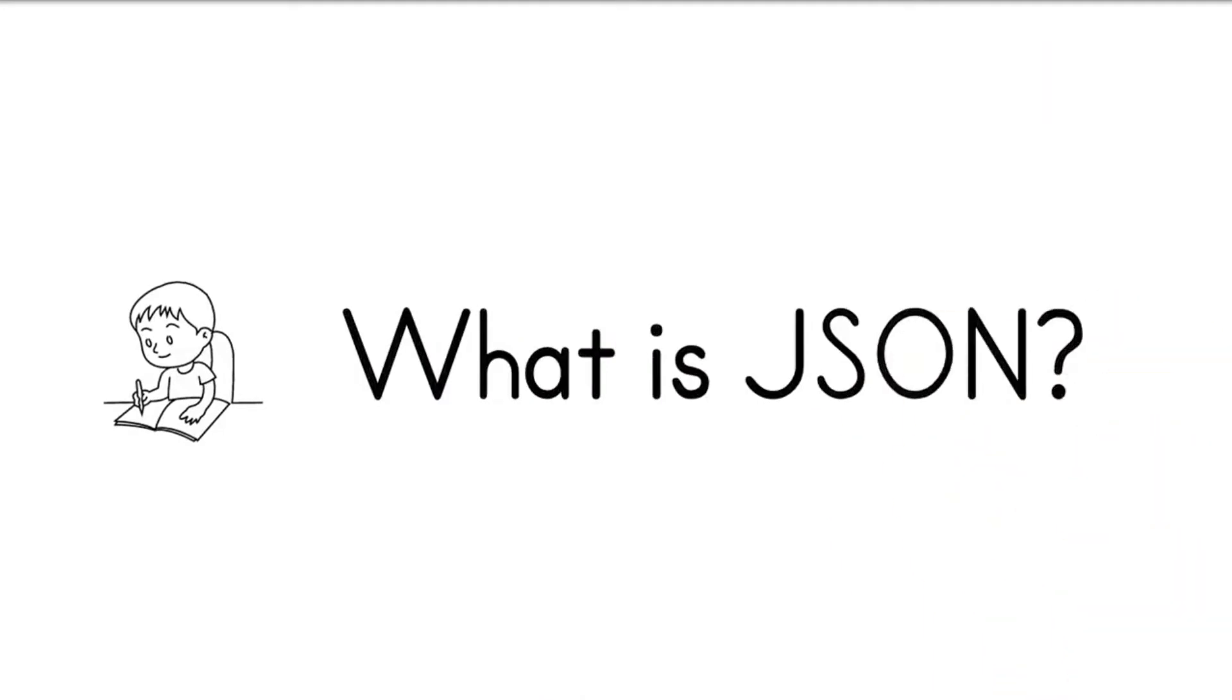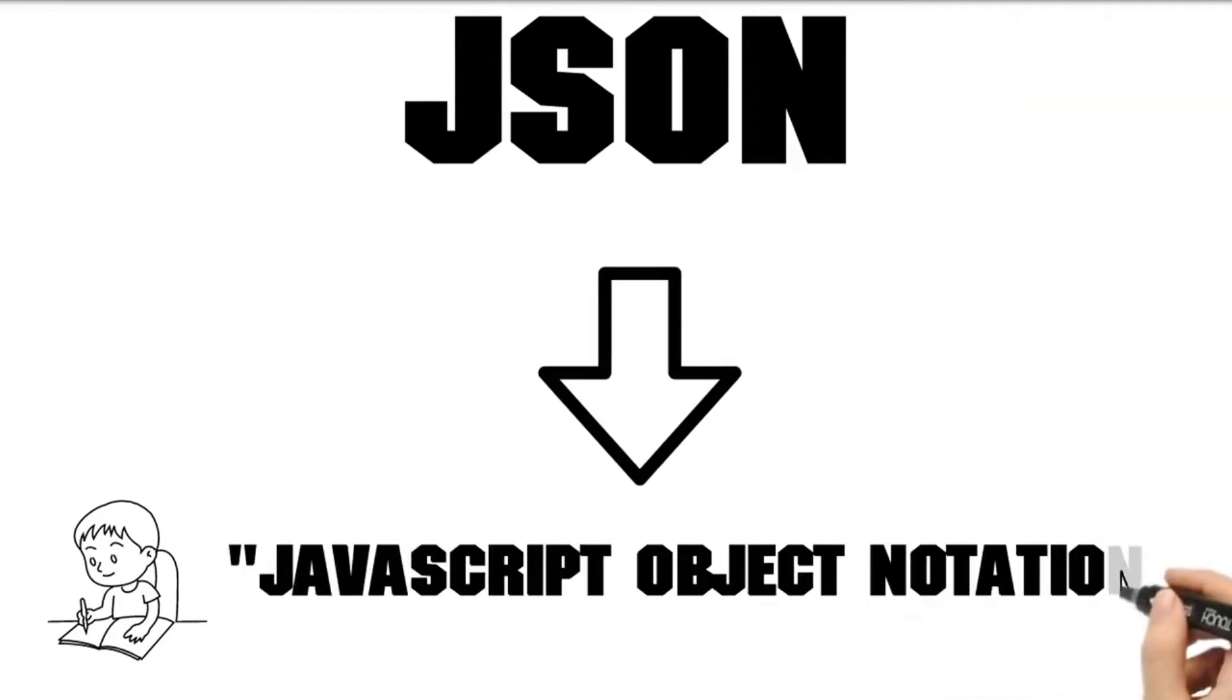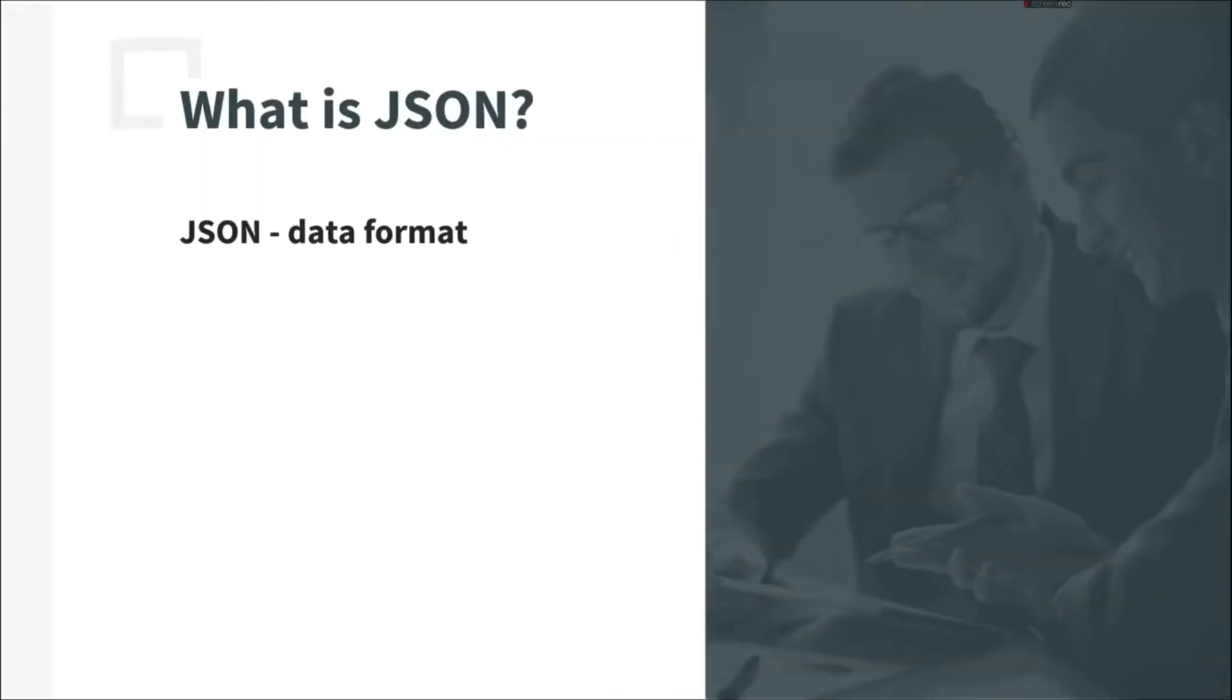So, what is JSON? JSON means JavaScript object notation. JSON is a data format which means it is used to serialize and deserialize data. JSON was designed to be easy to process by computer and easy to read or write by a human.